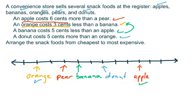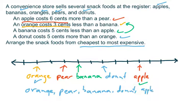So arranging the snack foods from cheapest to most expensive, we would have the orange first, followed by the pear, this comes straight out of my number line, the banana, the donut, and finally the apple as the most expensive of these items.